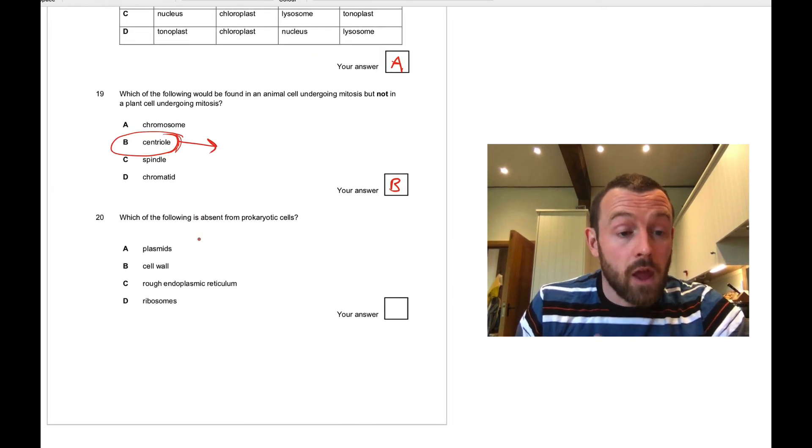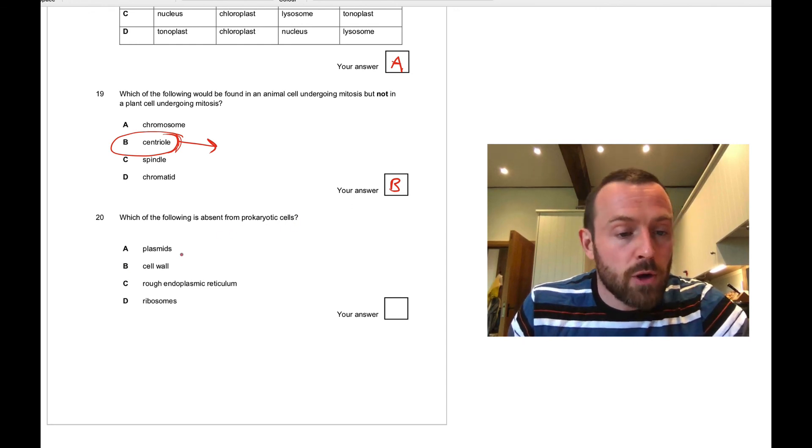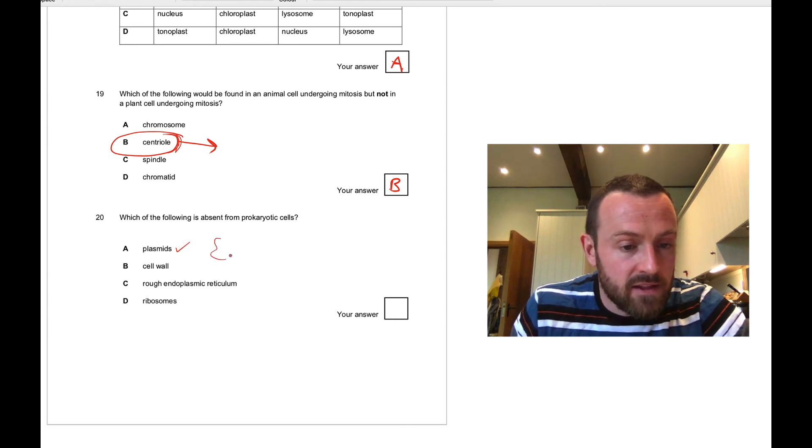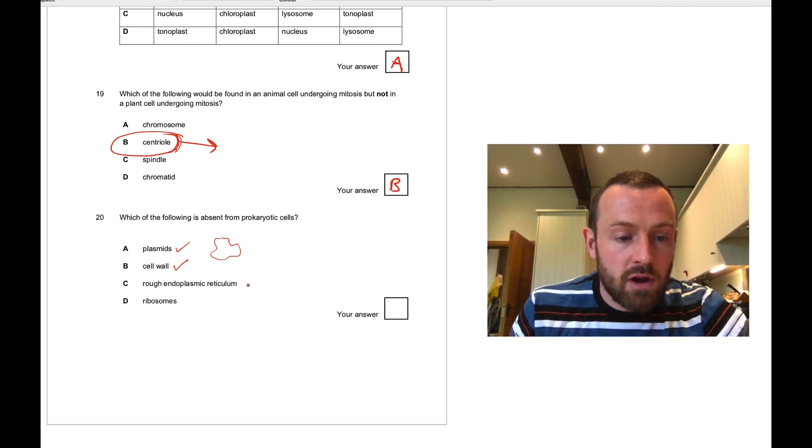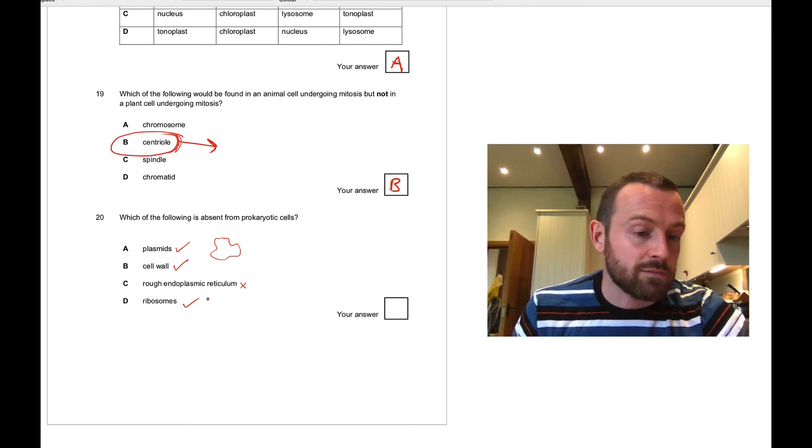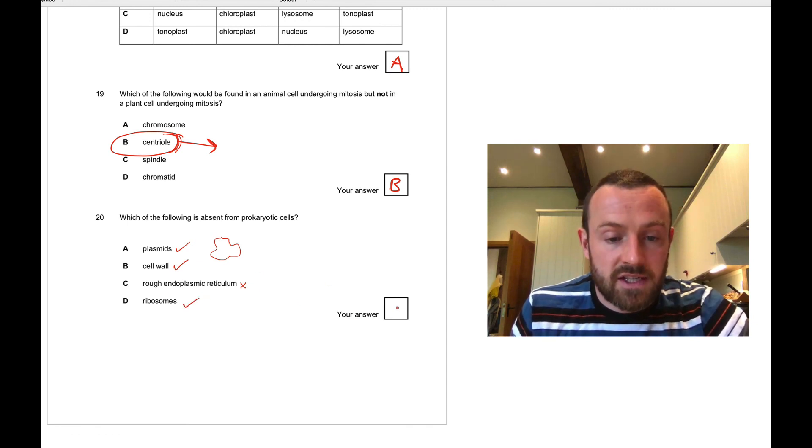Question twenty: which of the following is absent from prokaryotic cells? Prokaryotic cells do have plasmids—there's a circular loop of DNA that carries a gene. Cell wall, yes, they do, made of peptidoglycan, not cellulose. Rough endoplasmic reticulum, they do not have that. And ribosomes, of course they do. They have to make proteins. So the answer is therefore C.